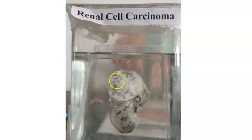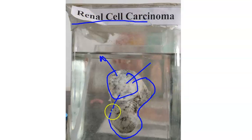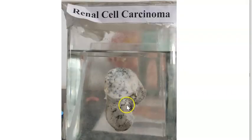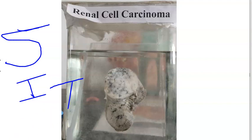Renal cell carcinoma grows and ruptures out of the capsule, but the shape of the kidney is still maintained. In contrast, Wilms' tumor stays within the capsule and the bean shape of the kidney is not maintained. In the next video we will look at staging, investigations, and treatment for renal cell carcinoma.